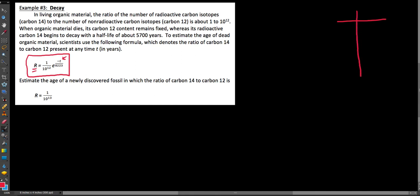So it says, in living organic material, the ratio of the number of radioactive carbon isotopes, carbon-14, to the number of non-radioactive carbon isotopes, carbon-12, is about 1 to 10 to the 12th. When organic material dies, its carbon-12 content remains fixed, whereas its radioactive carbon-14 begins to decay with a half-life of about 5,700 years.